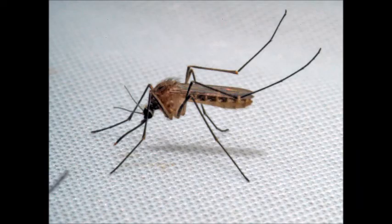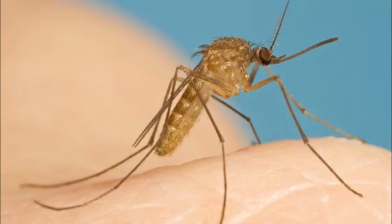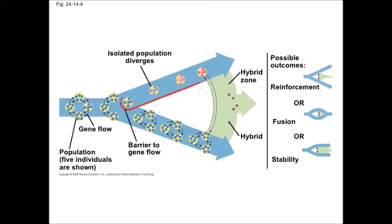The mosquito Culex pipiens separated into two distinct species because of World War II. In London, some people took to the underground railway tunnels for cover from German bombs, and they carried mosquitoes with them. Because of this, the population of C. pipiens underground speciated into C. molestus. Hybrids can even, on occasion, become new species if they can form a population of sexually reproducing individuals distinct from the parent populations.